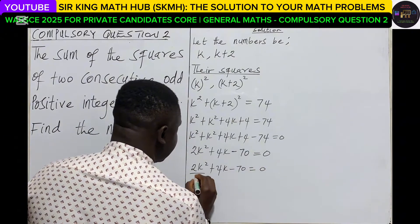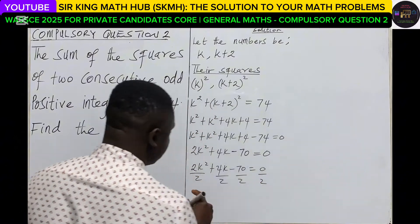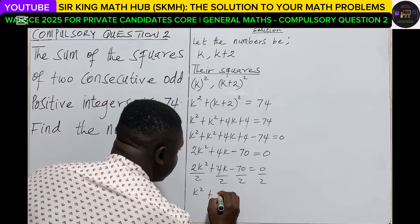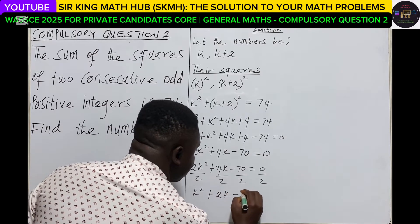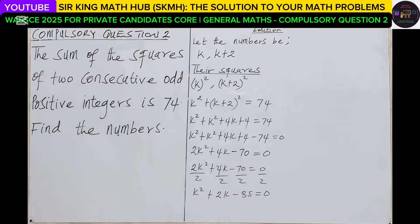So when you divide each term by 2, we end up getting k squared plus 2k minus 35 is equal to 0. So now we have our quadratic equation.